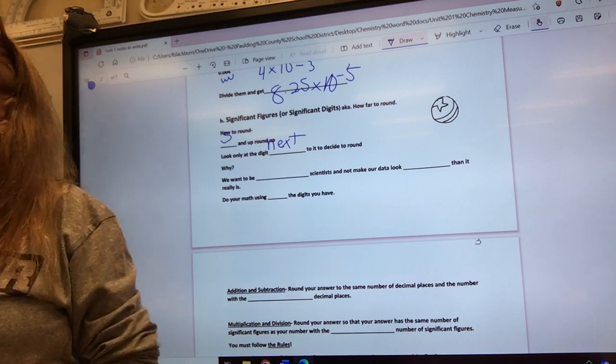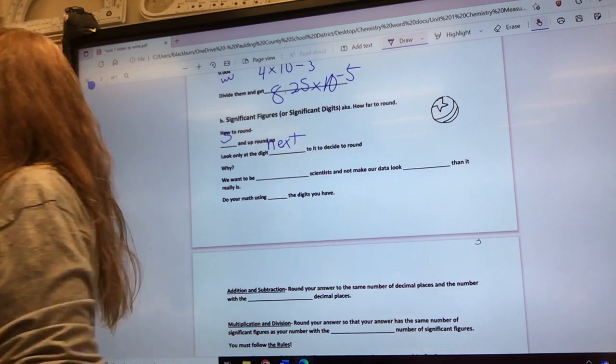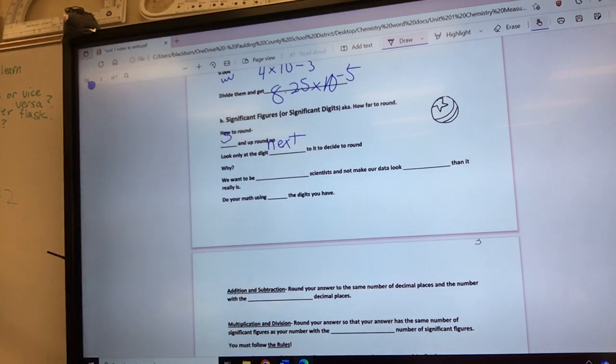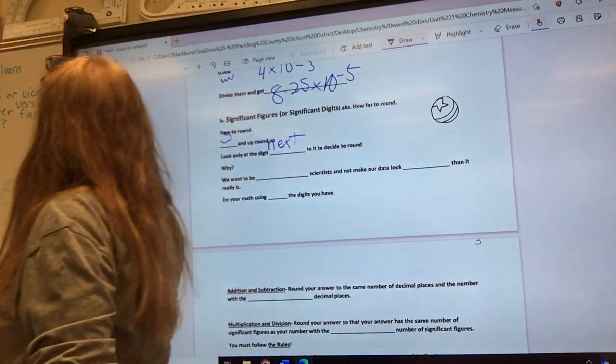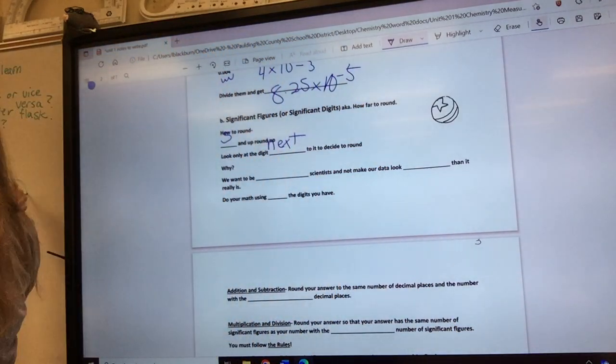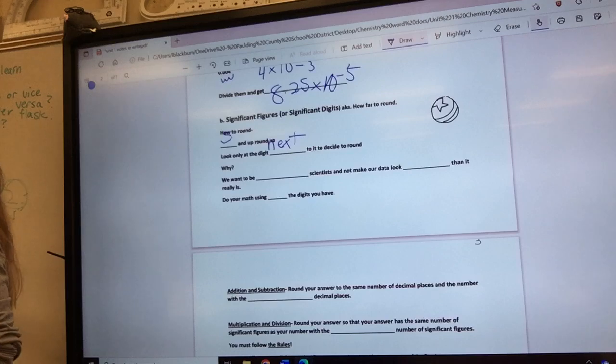The reason why is this. Remember, this is ones, tenths, hundredths, thousandths, ten-thousandths, hundred-thousandths, millionths, ten-millionths. This ten-millionth, if we were looking at it, is so tiny that there is no way this ten-millionth can have any effect on this great big ones place. Does that make sense to you?